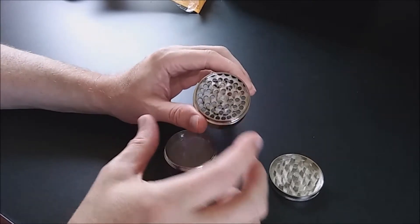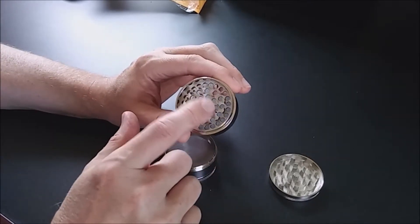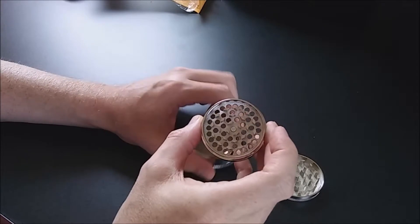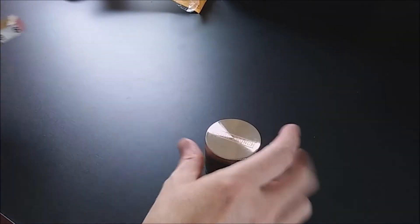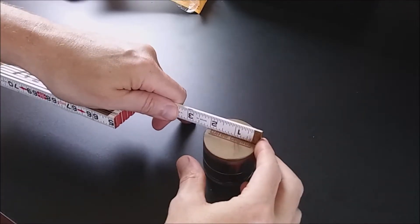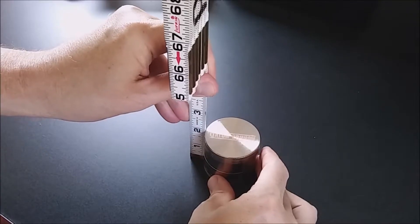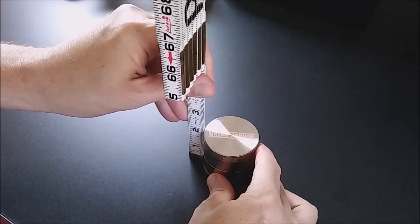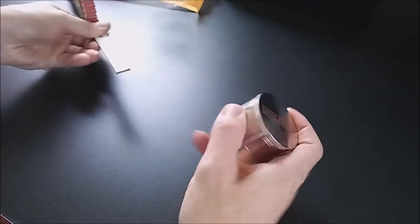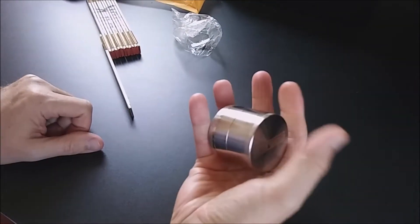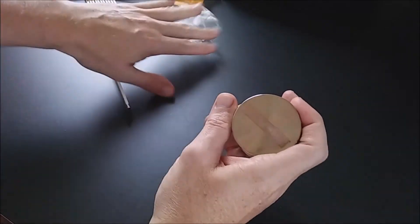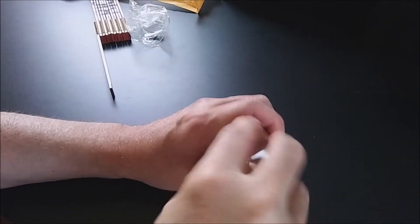There's 44 precision cut holes to allow your cuttings to fall through. Measurement on this: it's going to be about two and an eighth inches wide by one and fifteen-sixteenths to the top, almost two inches. So it's a good size grinder.